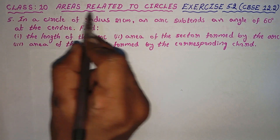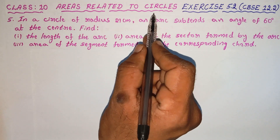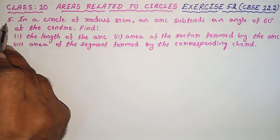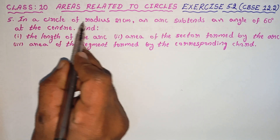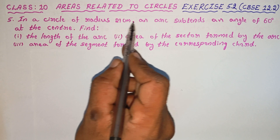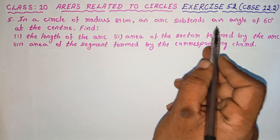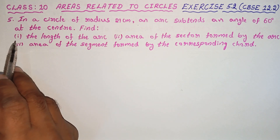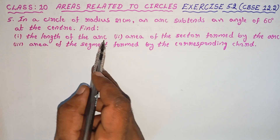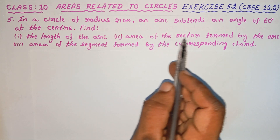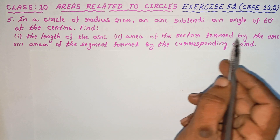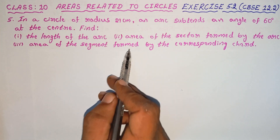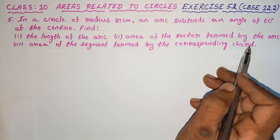Clause 10, Areas Related to Circles, Exercise 5.12. We are going to solve the 5th problem. In a circle of radius 21 cm, an arc subtends an angle of 60 degrees at the center. Find: first, the length of the arc; second, the area of the sector formed by the arc; third, the area of the segment formed by the corresponding chord.